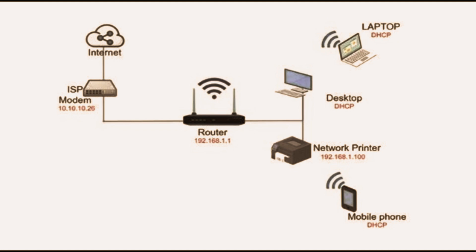Let's take a look at a real-life implementation example. Your internet service provider sends the internet signal to the modem. The modem is responsible for converting the signal from your ISP into a format that can be used by other devices. The router then takes the internet signal from the modem and distributes it to various devices in your network, handling the local network's IP addressing and managing traffic between devices.